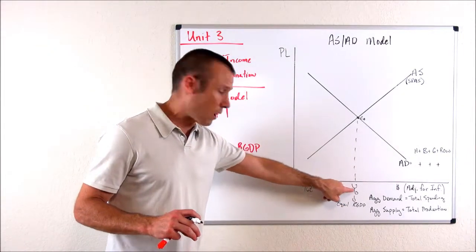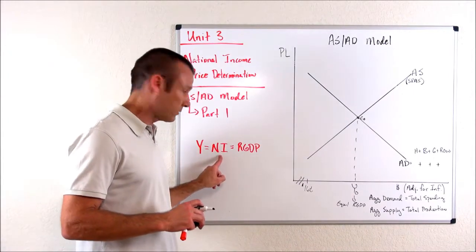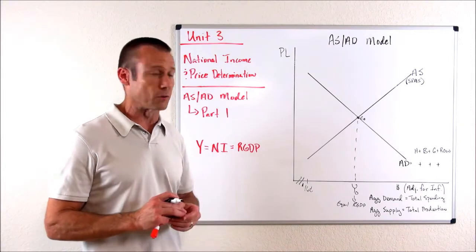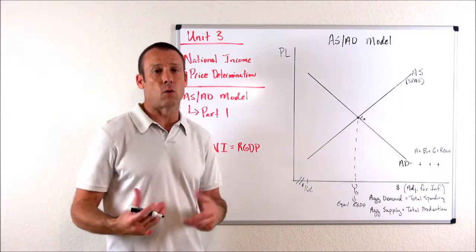But Y zero is our equilibrium real GDP. Remember, once again, I'm using Y. Y is national income, and it is real GDP. These three things are 100% synonymous. So here's kind of how it works.